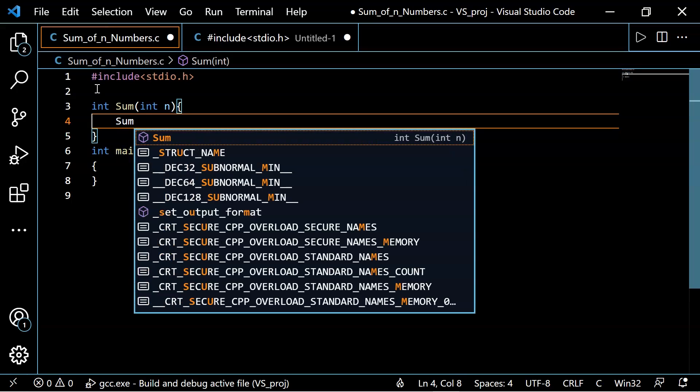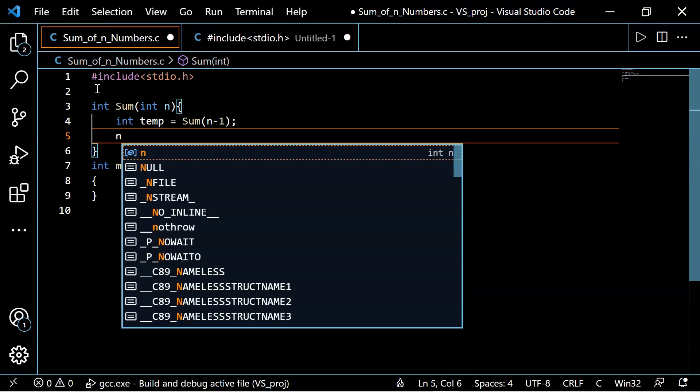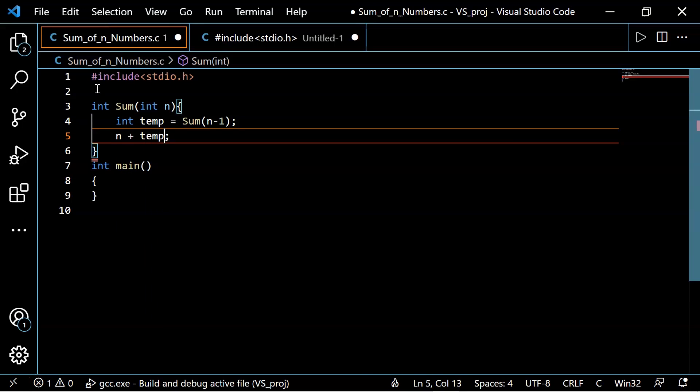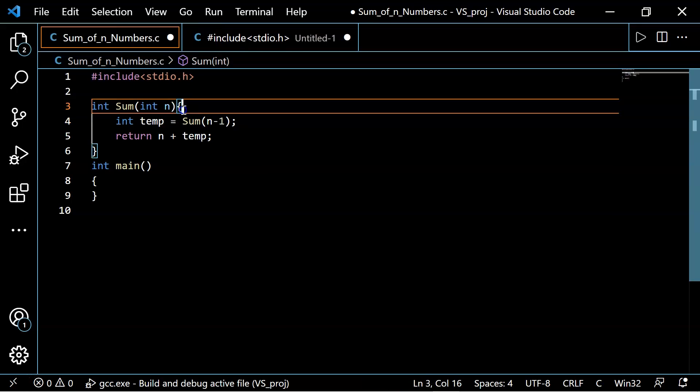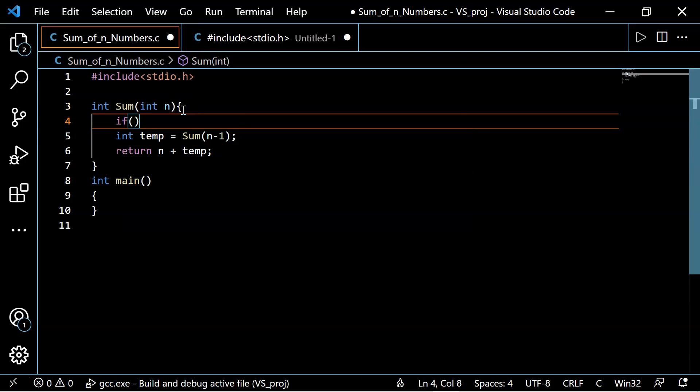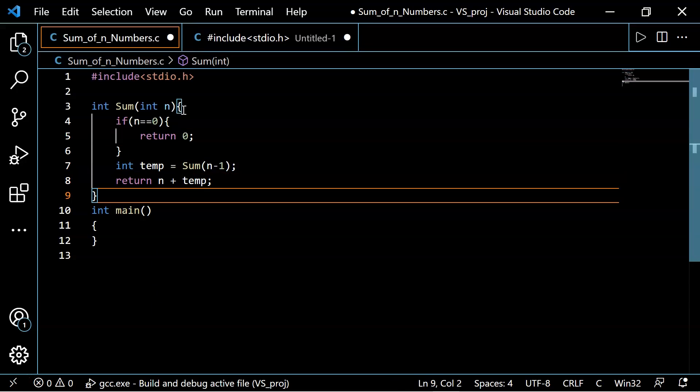So let's do that, sum of n minus 1, and we'll store this value inside temporary variable. Now we'll add this temporary variable's value to n in order to return it as a result. The statements that we just wrote are called recursive steps. But if you observe this statement, we're not putting any limitation to our recursive call. So that is why we'll have to add base case to our function. So let's do that. If n equals 0, then return 0. With this, we have successfully implemented a sum function.